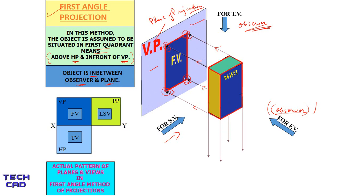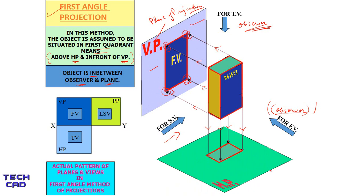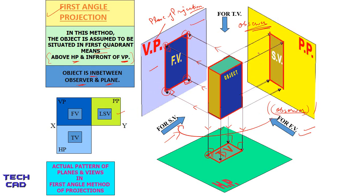For the top view, we have lines of sight from the top downward. The plane of projection for the top view is the horizontal plane. The lines of sight meet at 90 degrees because it is orthographic projection, and joining those points gives the top view. For the left side view, the observer moves to their own left. The profile plane receives the projection. The lines of sight meet the profile plane at 90 degrees, and joining those vertices gives the side view of this object.